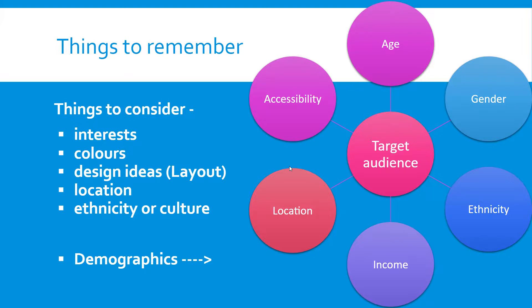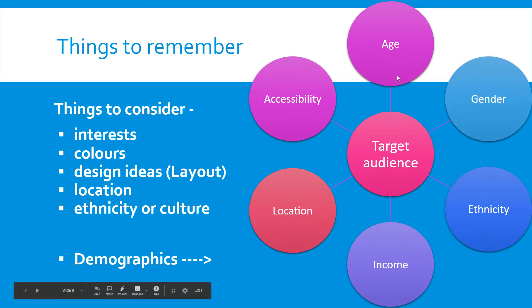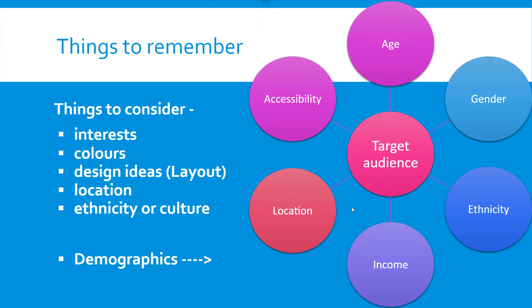Things to remember when thinking about target audience: consider what their interests are, what colours might attract them, and what design ideas you might use — so the layout, for example. Also consider location, where they're based, ethnicity or culture. And remember the full demographics table: age, gender, ethnicity, income, location, accessibility. Think about all of these things when writing in the exam — if you get asked questions about this, make sure you're including all of these things.